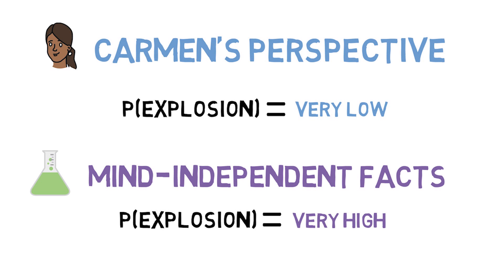What we have here, then, is a case in which one type of probability, Carmen's degree of belief, or credence, is, and indeed should be, very low. And another type of probability, the objective probability, or chance, is very high.